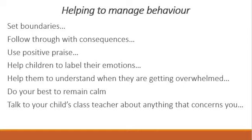Now for some top tips to help you manage behaviour at home. Firstly, set boundaries — have really clear expectations of the behaviour you expect to see. Follow through with consequences: if you say something's going to happen, make sure that it does. Use lots of positive praise and really hone in on the great things that your children are doing. Help your child to label their emotions and find the words for their feelings. Help them to understand when they're getting overwhelmed and spot the triggers. Most importantly, do your best to remain calm — this can be really challenging, especially if your children experience very heightened emotions. However, please remember that children will feed off your energy, so if you remain calm, this will ultimately have a calming influence on them.